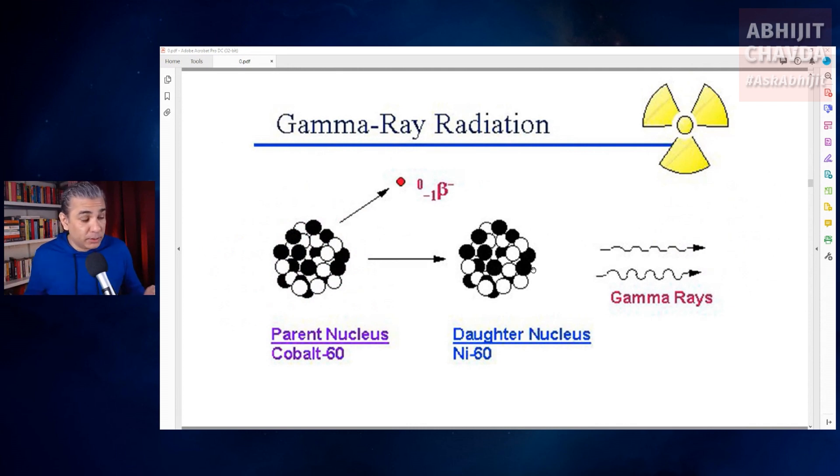Beta rays are electrons and gamma rays, which are extremely dangerous to human beings and living beings, are very high energy photons. In spontaneous fission, an atom actually splits into two or more nuclei instead of throwing off an alpha particle or beta particle.